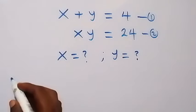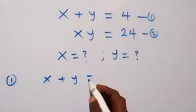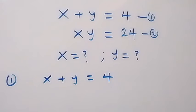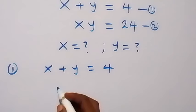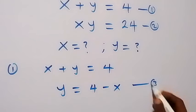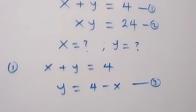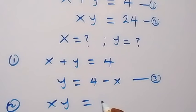In front of equation 1, we have x plus y equals to 4. From here, we can take x to this side and we have y equals to 4 minus x. Let's label this as equation 3. Then from equation 2, we have x times y equals to 24. So let's substitute equation 3 into equation 2.